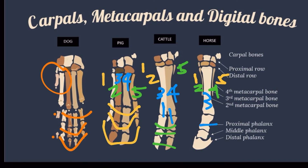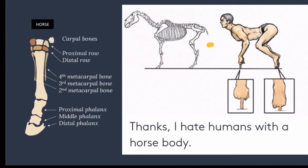The distal sesamoid bone is called the navicular bone. From the perspective of evolutionary and developmental biology, a horse hoof is literally a giant middle finger.